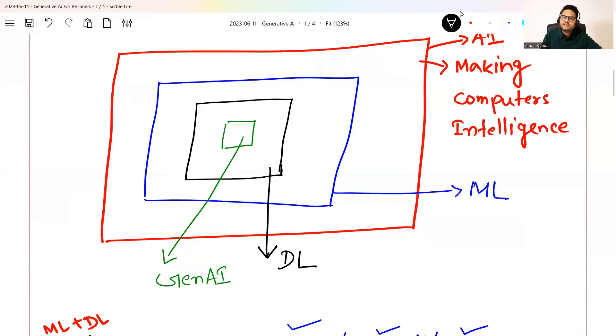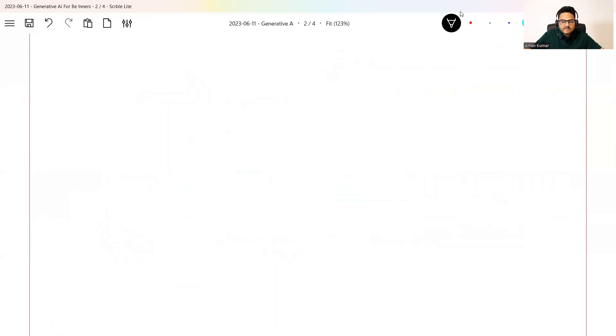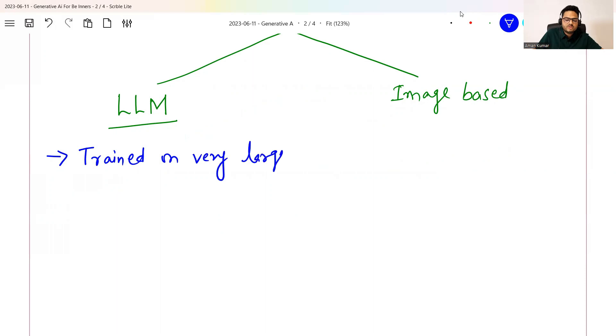Let's move ahead and try to understand the major categories of generative AI. Broadly, two main categories of generative AI you will hear. One of the most important categories that is in the news and everybody knows about is something known as large language models. And another category of generative AI which is also very popular but not as popular as large language models is known as image based. What are large language models? Large language models have certain properties that we need to understand. Basically, this is text-based normally. It is trained on the text data. Trained on very large data. This is one property of large language models.